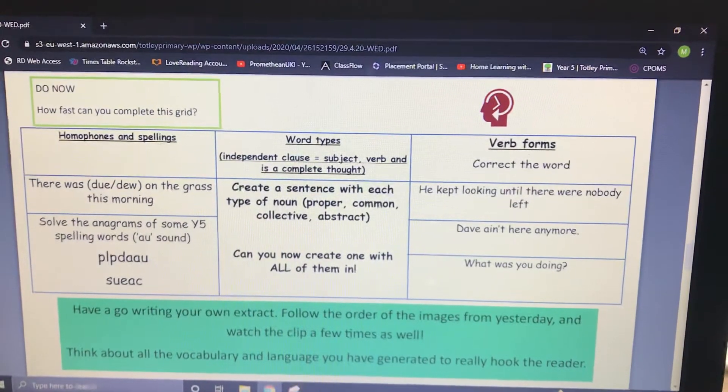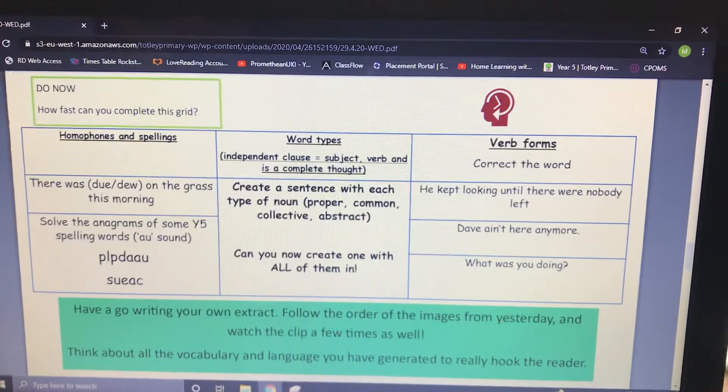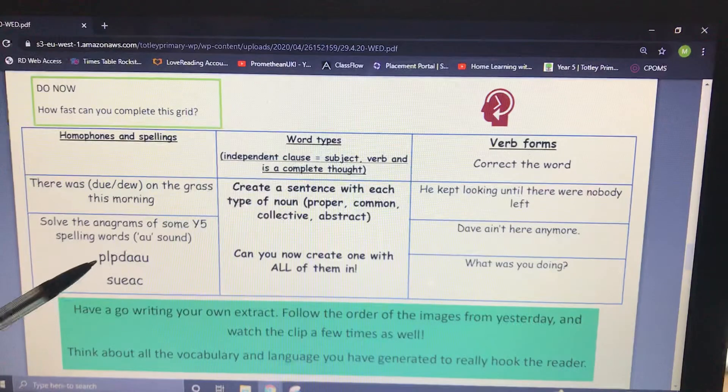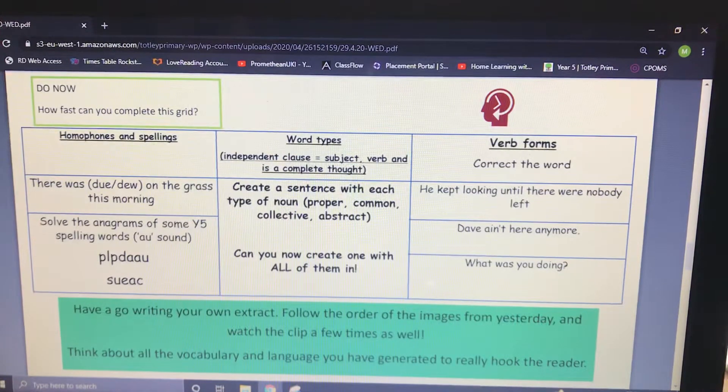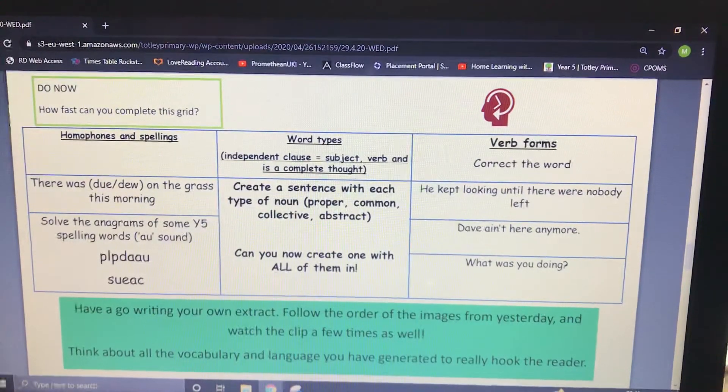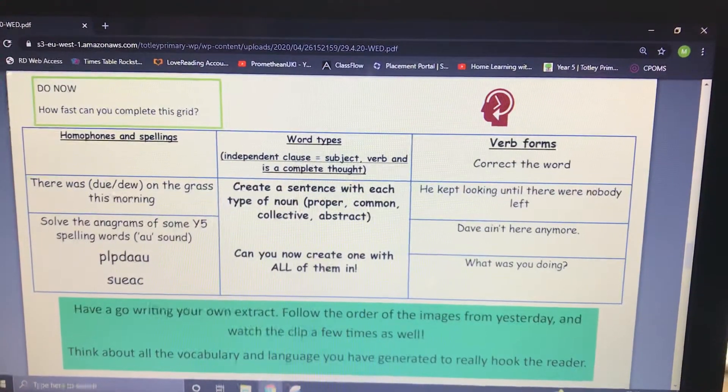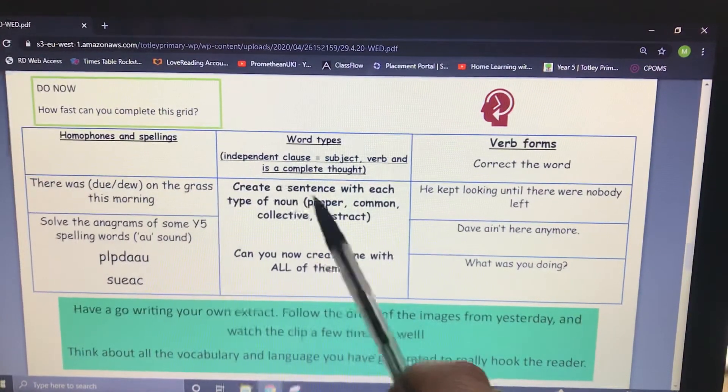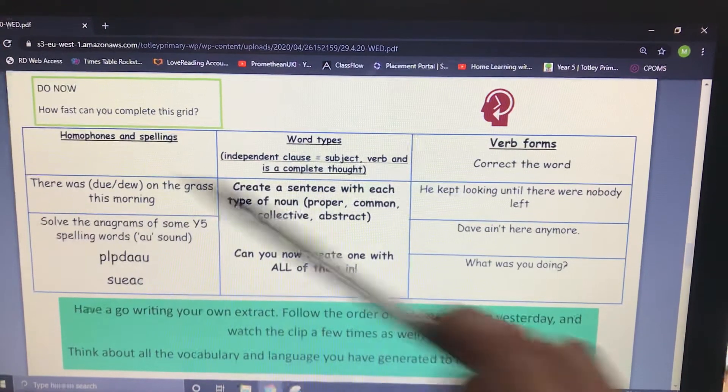Solve the anagrams, and it's the 'or' sound. So you've got applaud. Is it applaud? Yes, it's applaud, to applaud. And you've got cause, to cause disruption or to cause a problem. Well, I don't know if you've got those. Notice I didn't have to find them today. I could work those ones out.